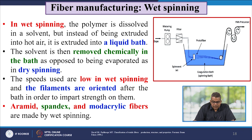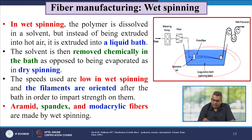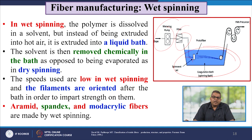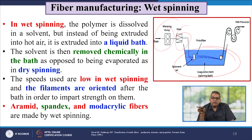In wet spinning, the polymer is dissolved in a solvent but instead of being extruded into hot air, it is extruded into a liquid coagulation bath. The solvent is then removed chemically in the bath, as opposed to being evaporated in dry spinning. Speeds used are low in wet spinning, and the filaments are oriented after the bath to impart strength. Aramid, spandex, and modacrylic fibres are made by wet spinning.